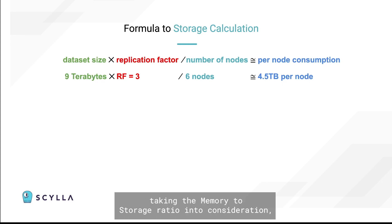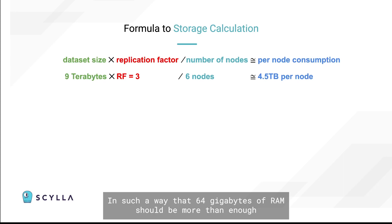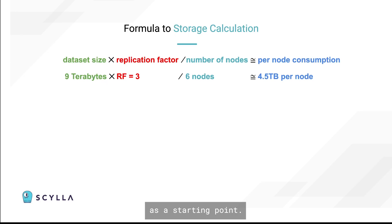Taking the memory to storage ratio into consideration, dividing the result of 4.5 terabytes by 100 would result in 45 gigabytes of RAM, such that 64 gigabytes of RAM should be more than enough as a starting point.